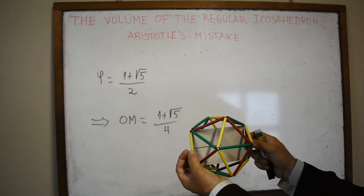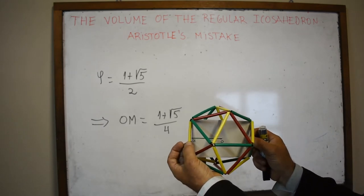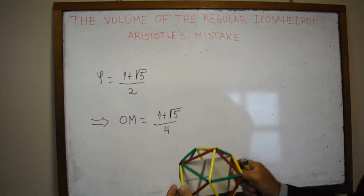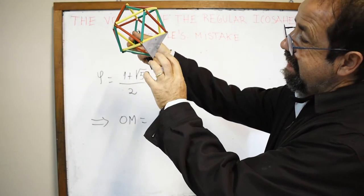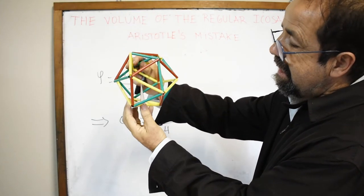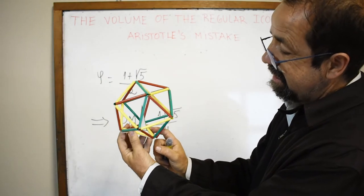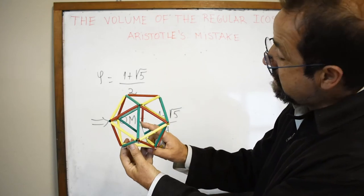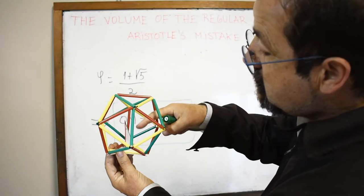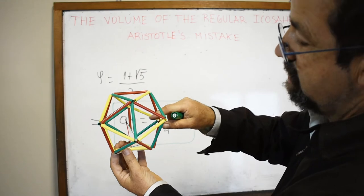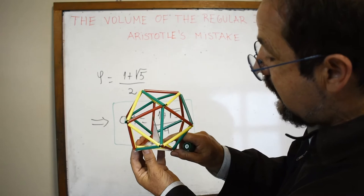All edges are equal since this is regular. The green segment is the distance between the center and the midpoint of the edge. Moving to a third figure: we have the base of the tetrahedron of side one. OM is the green segment from center to midpoint of a side, and OG will be the height of the tetrahedron. First, we need to find MG.